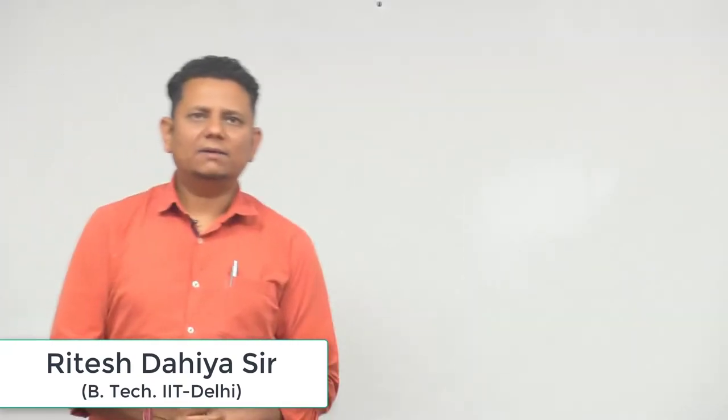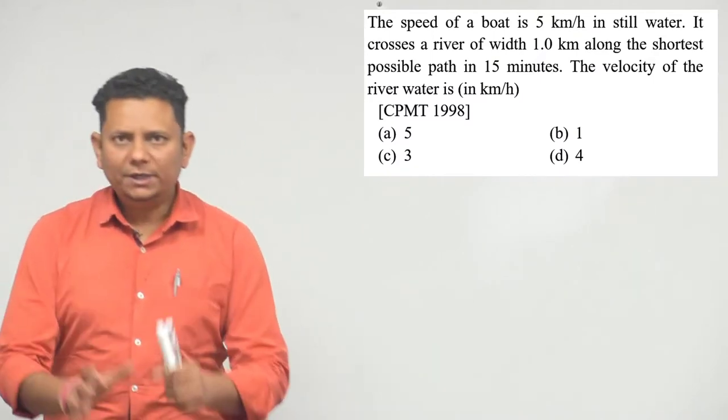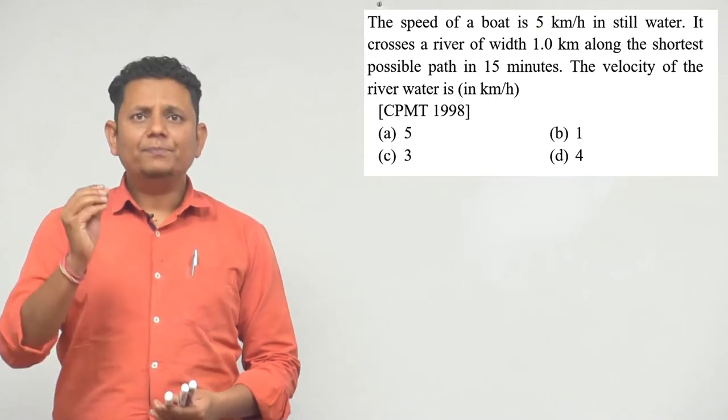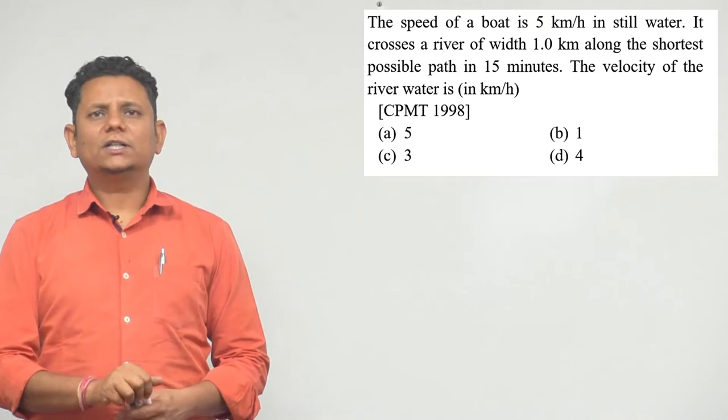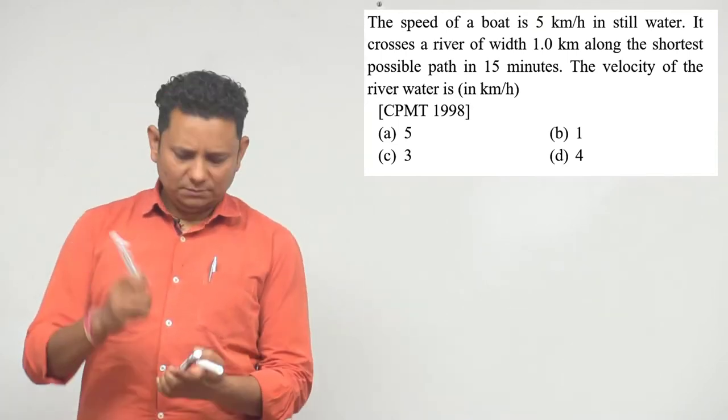Next question 98. The speed of a boat is 5 kilometers per hour in still water. It crosses a river of width 1 kilometer along the shortest possible path in 15 minutes. We need to find the speed of the river water.